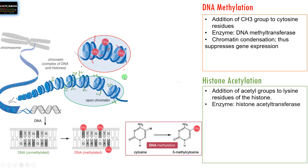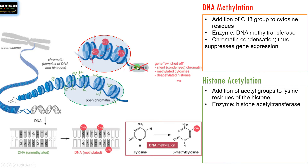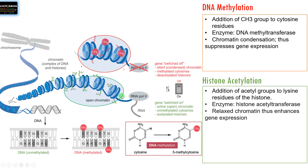By means of DNA methylation, chromatin condensation happens so that transcription factors may not have access to the promoter site, thus gene expression is suppressed — genes are switched off by means of DNA methylation. Whereas histone acetylation causes relaxation of chromatin so that transcription factors can bind to the promoter region easily, thus enhancing gene expression — genes are turned on by means of histone acetylation.